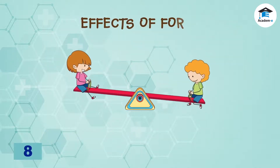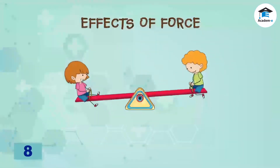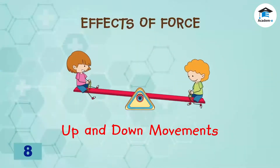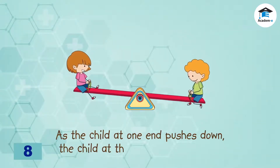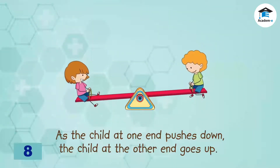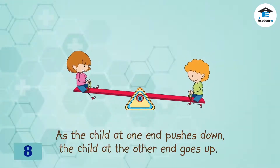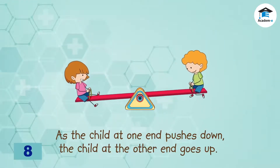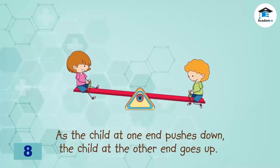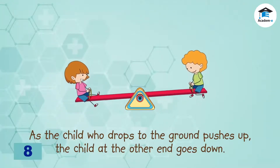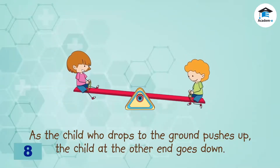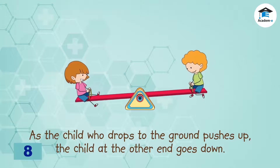Look at the picture of the two children riding on a seesaw. As the child at one end pushes down, the child at the other end goes up. As the child who drops to the ground pushes up, the child at the other end goes down.